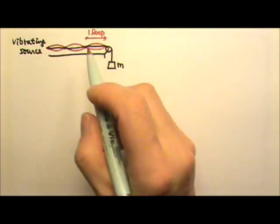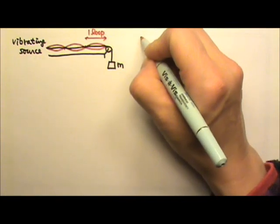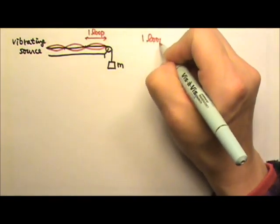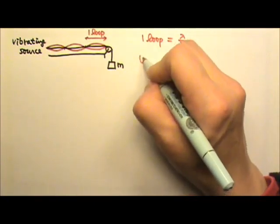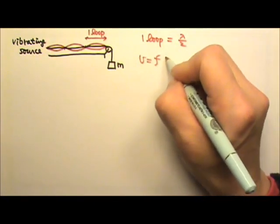So let's say now we have three loops oscillating on the string. We can figure out the length of one loop. The length of one loop always equals half a wavelength. And then we have speed equals frequency times lambda.